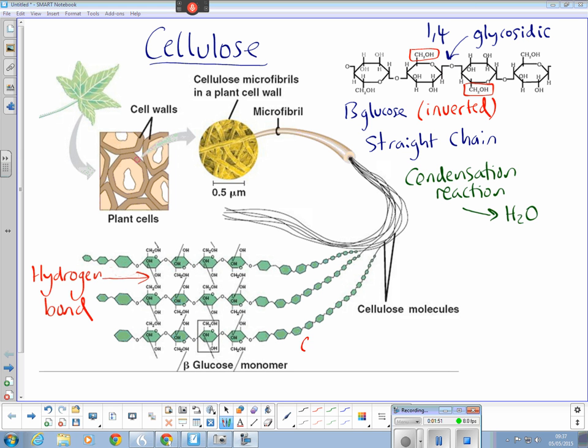When you get 60 to 70 chains held together with hydrogen bonds, those actually make a microfibril. And there we have it, cellulose in its entirety.